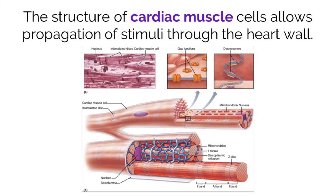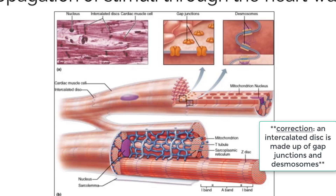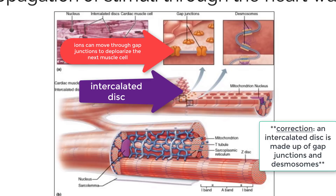Cardiac muscle cells are very unique in structure. These cells create tissue that is heavily branched and possesses gap junctions between them called intercalated discs. These discs separate the cells entirely and are a space for ions to be transferred from one cell to another, helping generate action potentials for the muscles in the heart to contract and create the heartbeat.